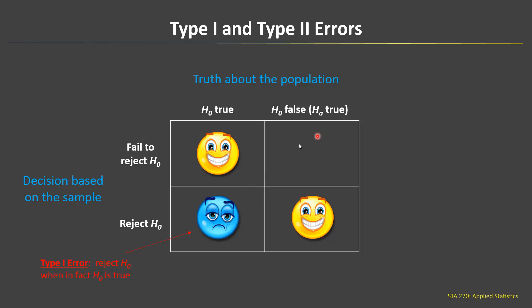The null hypothesis is false, so we really should reject it, but we failed to reject it — so again, we've made an error. When you fail to reject the null hypothesis when in fact the null hypothesis is false, that's called a type 2 error. Fail to reject the null when in fact the null is false.